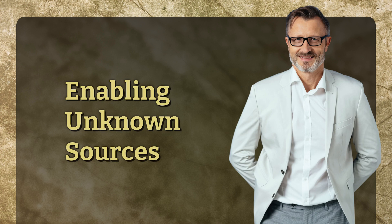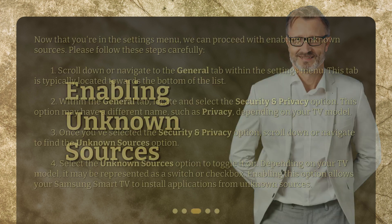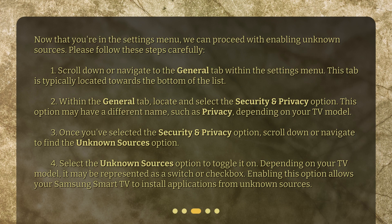Enabling unknown sources. Now that you're in the settings menu, we can proceed with enabling unknown sources. Please follow these steps carefully. Scroll down or navigate to the General tab within the settings menu. This tab is typically located towards the bottom of the list.